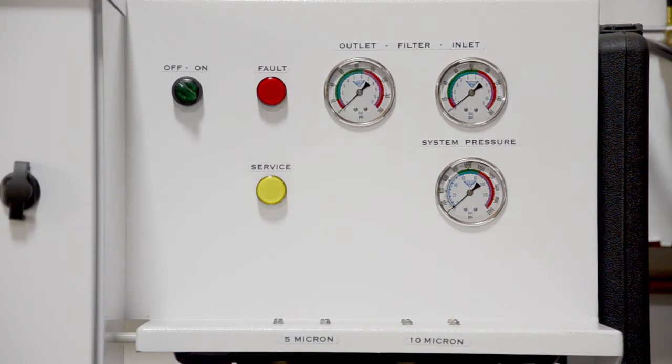Two inlet pressure gauges measure the water pressure coming in and leaving the filters. The high-pressure gauge confirms that the system is maintaining pressure in the system. In the event of the supply pressure dropping, the focus pump will automatically shut down.